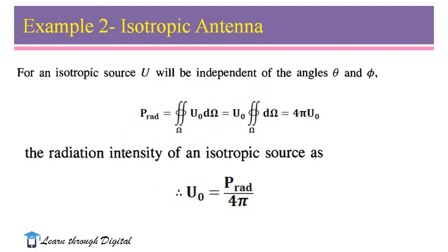In the second example, I am considering an isotropic antenna. For an isotropic source, radiation intensity U will be independent of the angles theta and phi, since it radiates equal amounts of power in all directions. Therefore, P_rad equals the solid angle integration of U₀ dΩ, which equals U₀ times 4π. Therefore, the radiation intensity of an isotropic source is equal to P_rad divided by 4π.